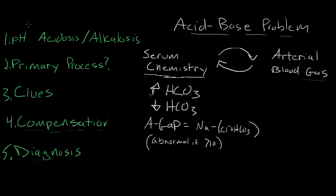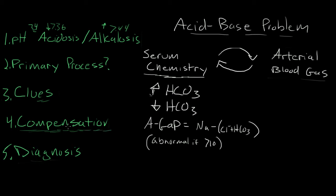In the human body, the normal pH is about 7.44. In acidosis, your value is usually below 7.36, and in alkalosis it's usually above 7.44; in between is considered normal. The second step is to determine the primary process — is this a respiratory or metabolic alkalosis or acidosis? The third step is to use different clues or lab values to narrow down your differential. The fourth step, which is a little more challenging, requires more analytics to determine if your primary process is having appropriate compensation. Finally, we take all our data together to figure out our diagnosis or make a narrow differential for our particular patient.